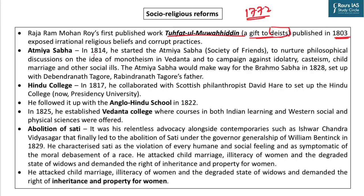In 1814, he started Atmiya Sabha, meaning Society of Friends. The purpose was to nurture the age-old Indian tradition of philosophical discussions but channelize them towards monotheism as described in Vedanta. The idea was that this ideological discussion would pave the way for enthusiasm and dedication for the campaign against idol worship, casteism, child marriage, and other social ills, especially Sati.